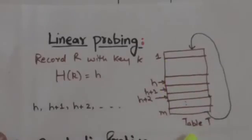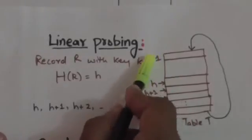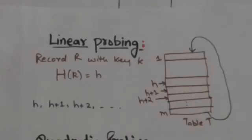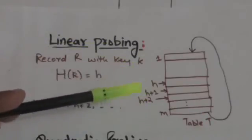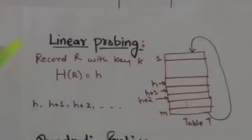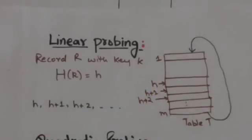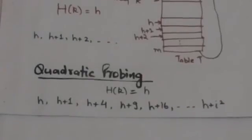We assume that table T has M locations and is circular, so that the location with hash address 1 comes after the location with hash address M. So if the memory location with hash address H is occupied, we linearly search hash addresses H+1, H+2, and so on, and add record R to the first available location following the memory location with hash address H.